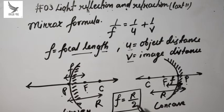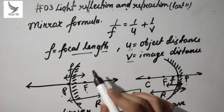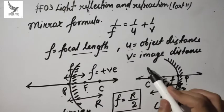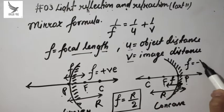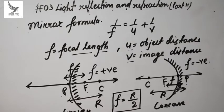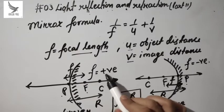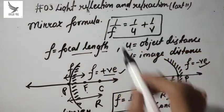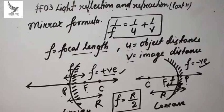Again, focal length is half the radius of curvature. Another important point: for a convex mirror, the focal length is taken as positive, and for a concave mirror, the focal length is taken as negative. We will understand why in the sign convention. So convex mirror → focal length positive; concave mirror → focal length negative. Now let's apply this formula with some questions.